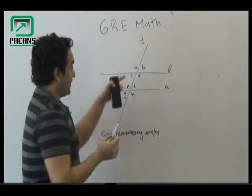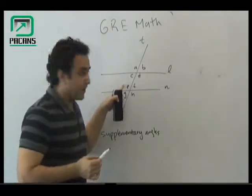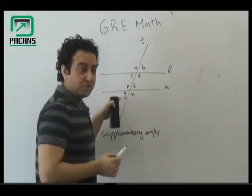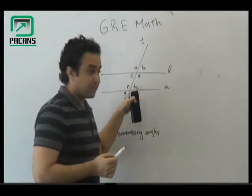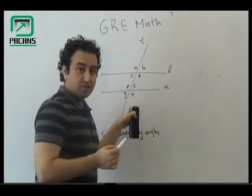you would know that angle A and E are corresponding angles, C and G are corresponding, B and F are corresponding, and D and H are corresponding.